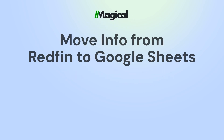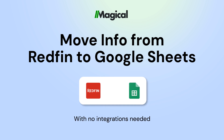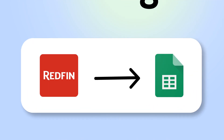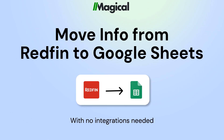Tired of copy-pasting info to Google Sheets? With Magical, you can transfer information from any app to Google Sheets without any code or integrations. It's easy.